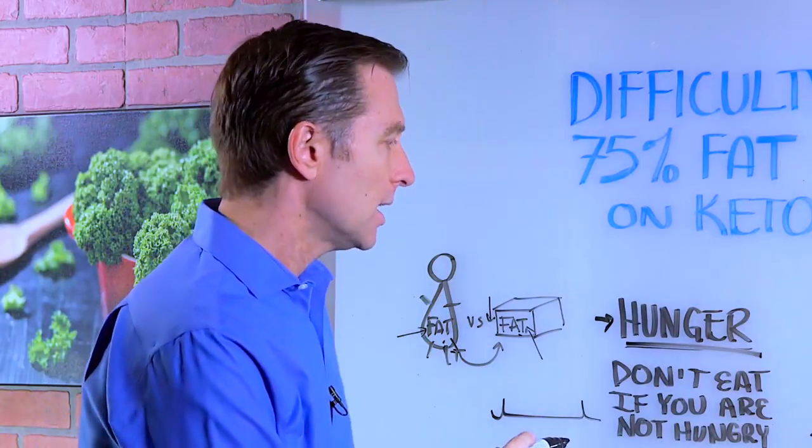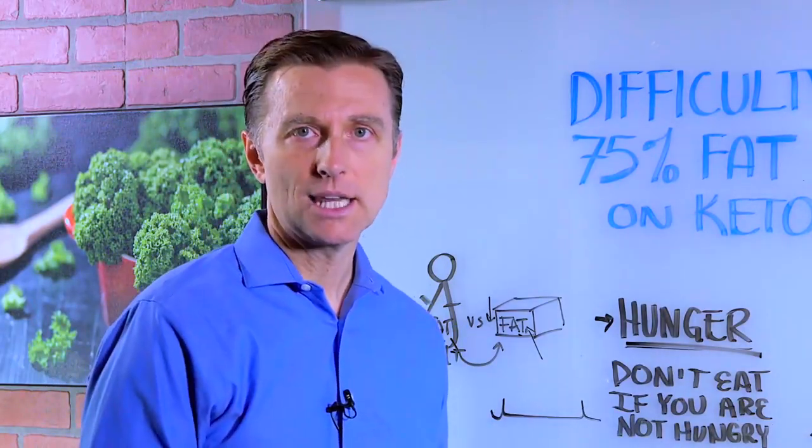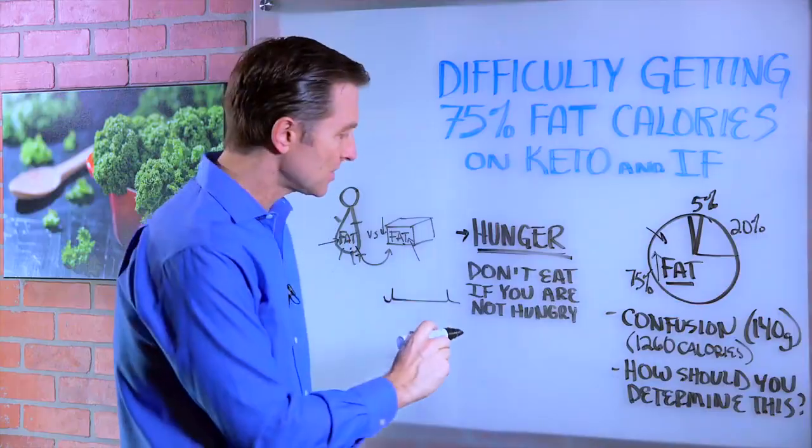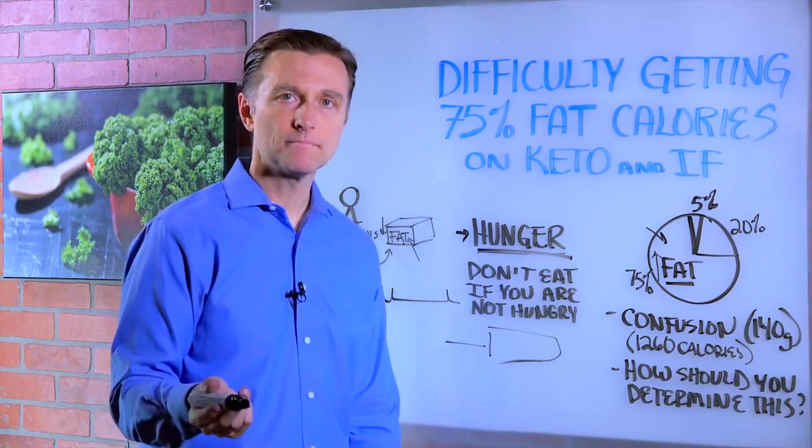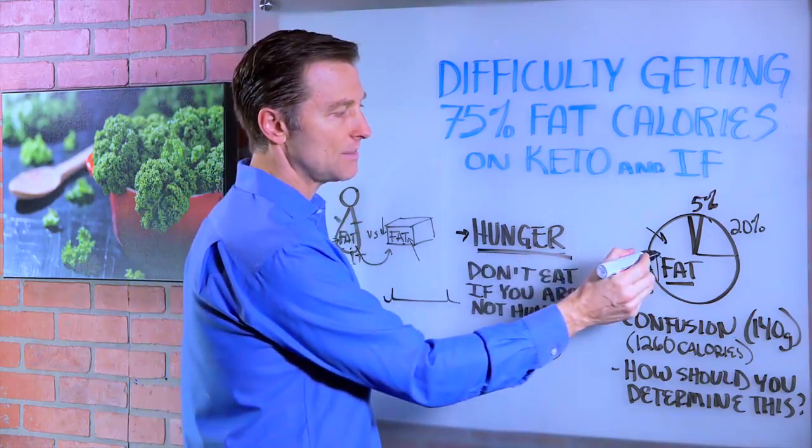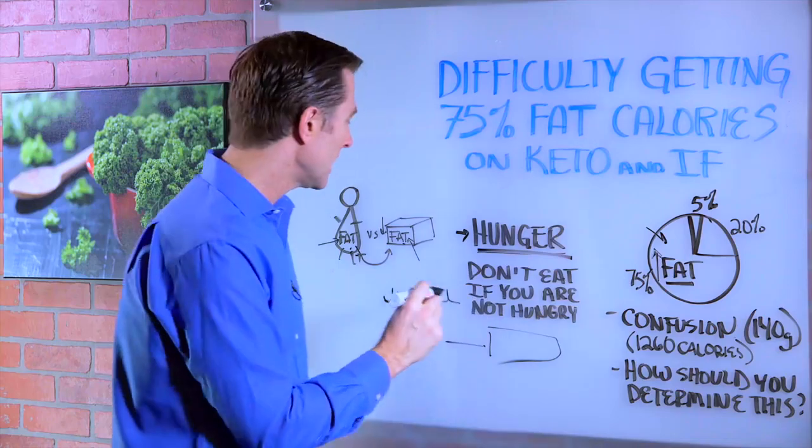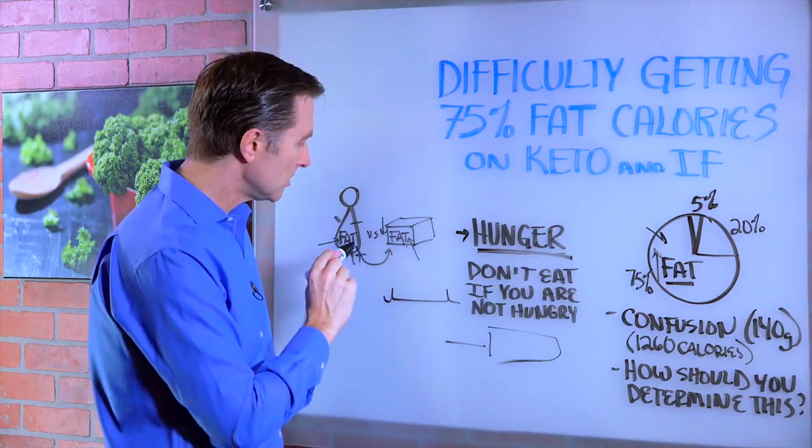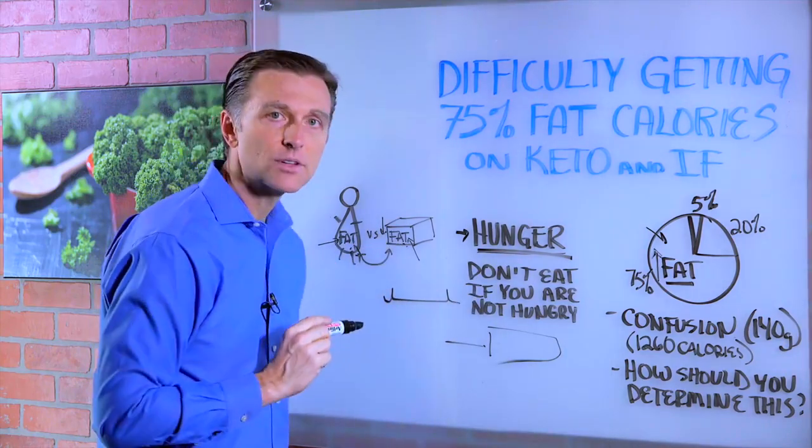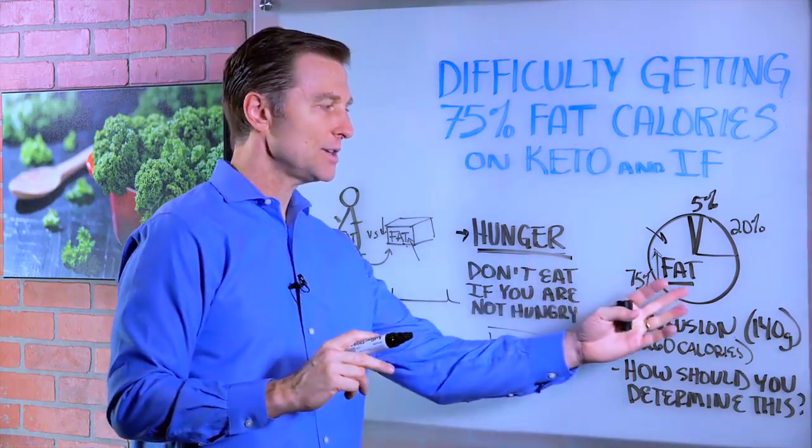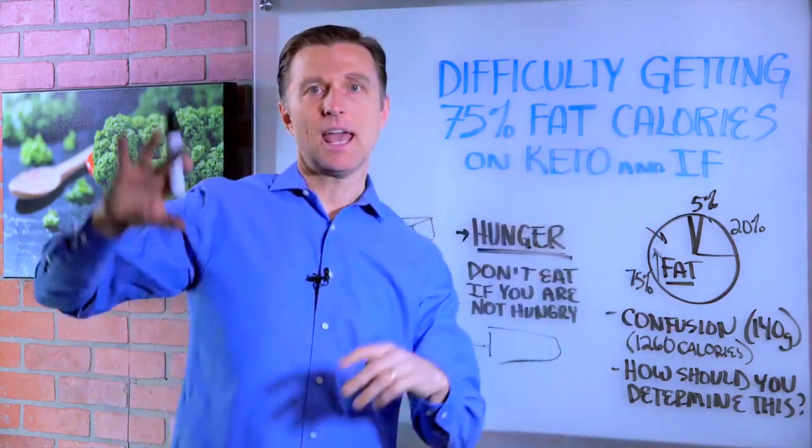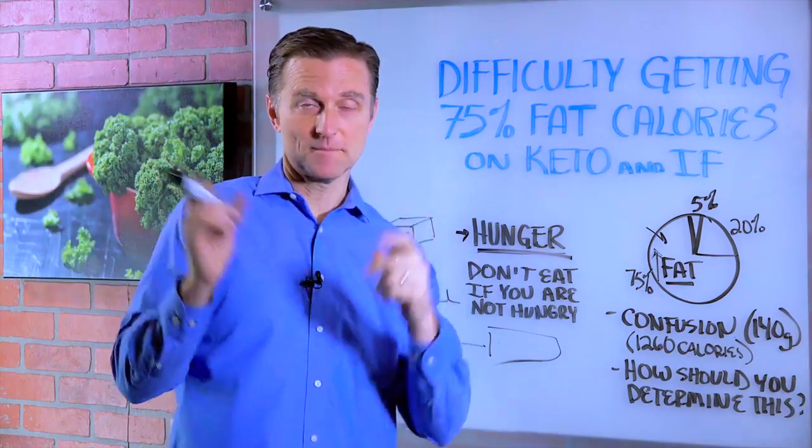So then when you hit your goal weight-wise and you're on a maintenance plan, let's say, for example, you lost all the weight that you wanted and you don't want to lose any more. Simply increase the amount of fat in the diet and that will cause you to burn up less of your own fat. So you're going to increase your fat in the very beginning and in the maintenance, but not in the middle. Does that make sense?